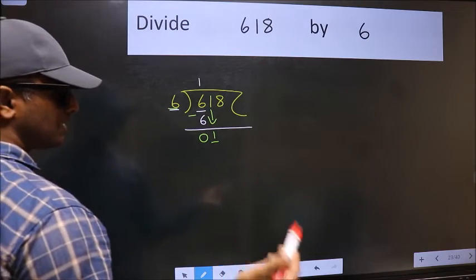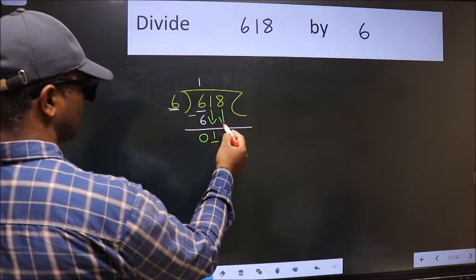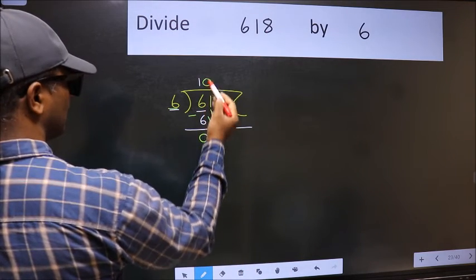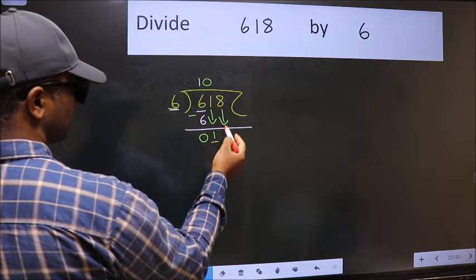So we should bring down the second number. And the rule to bring down the second number is we should put 0 here. Then only we can bring this number down.